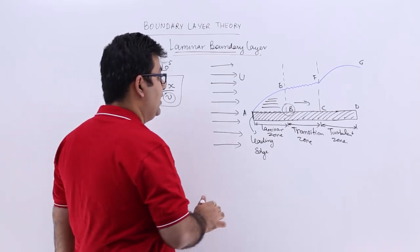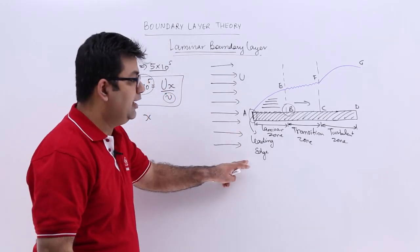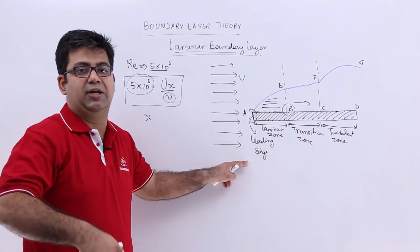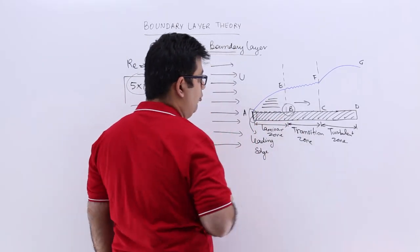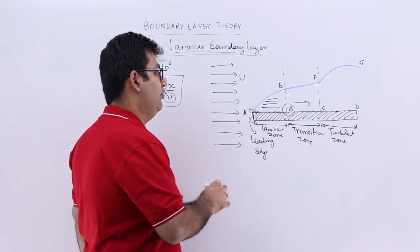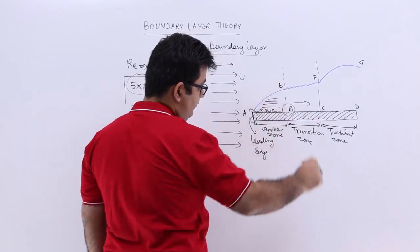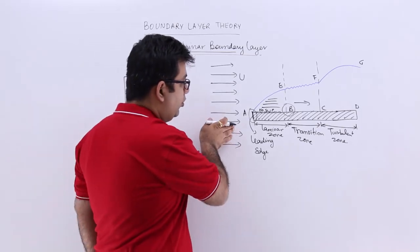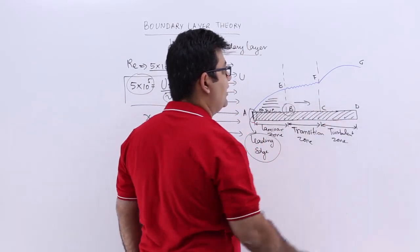Just at the leading edge, the boundary layer starts to form. The layer of the fluid in the vicinity of the plate is at zero velocity, called the no-slip condition. As you keep going further away from the leading edge, the boundary layer size keeps increasing.